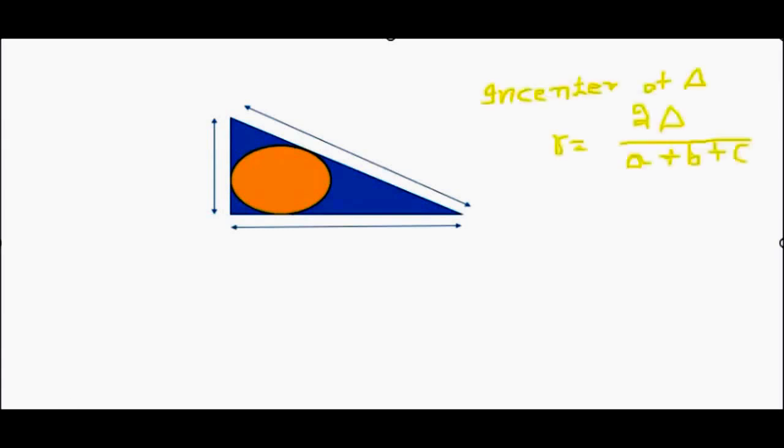So we usually find radius of in-center as R is equal to 2 delta upon A plus B plus C, where A, B, C are sides and delta is the area of triangle.